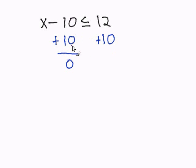Now we simply apply our addition. Negative 10 plus 10 is 0, and 12 plus 10 is 22.